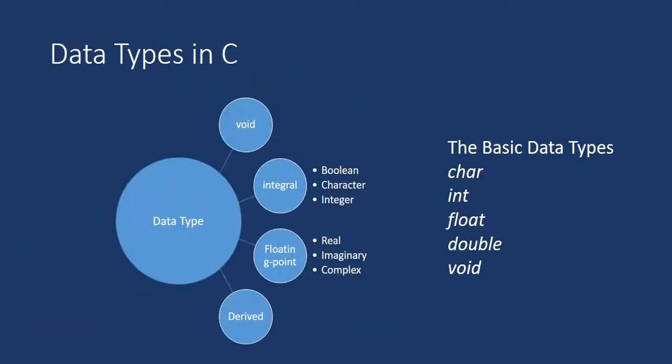There are four kinds of basic data types in C. One is void. Void means it is nothing, it holds nothing.